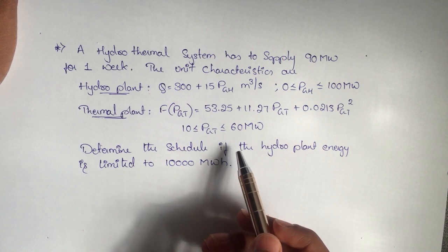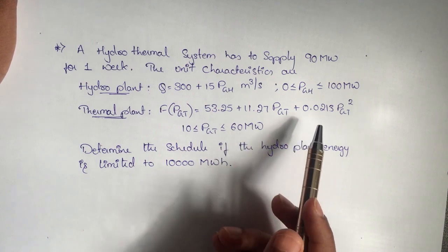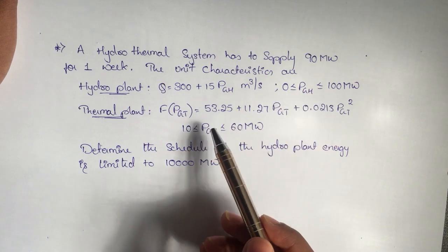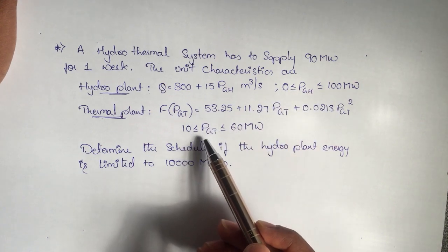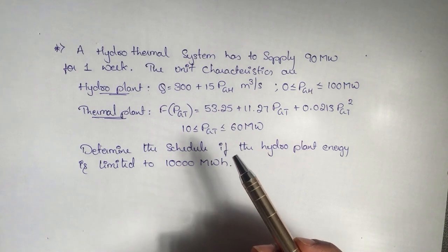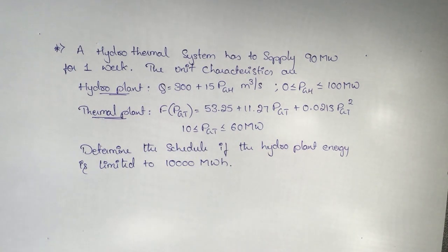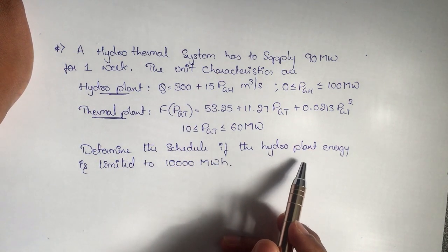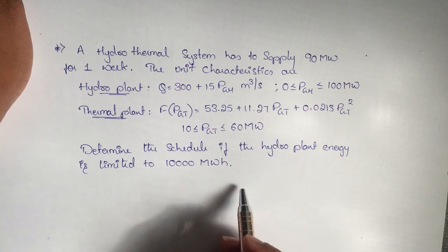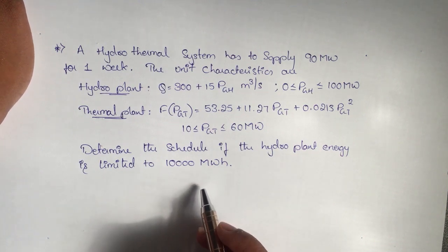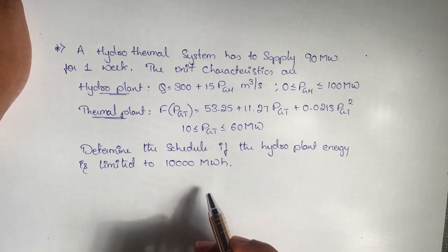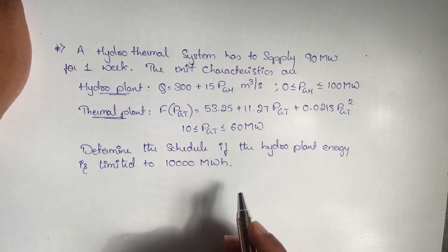The constraint is P_GT lies between 10 to 60 megawatt, and hydro power generated lies between 0 to 100 megawatt. They have also asked to determine the schedule if the hydro plant energy is limited to 10,000 megawatt hour — what would be the schedule?